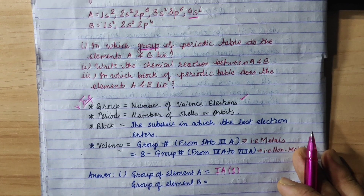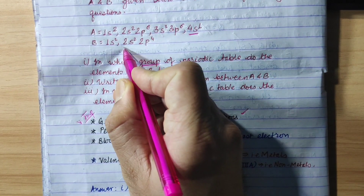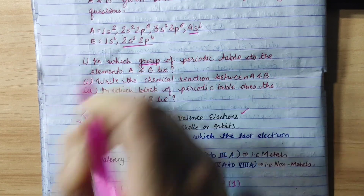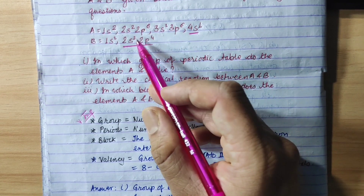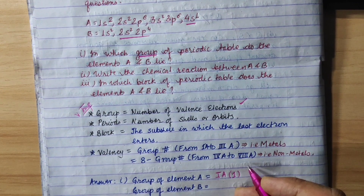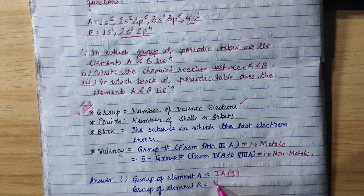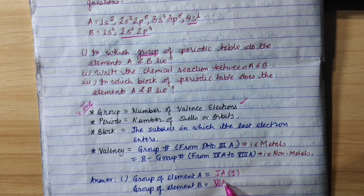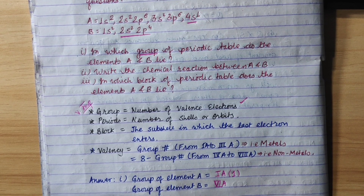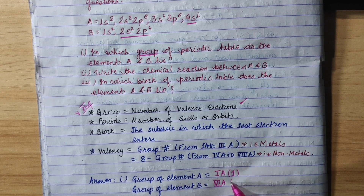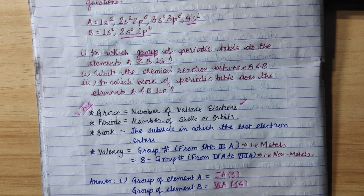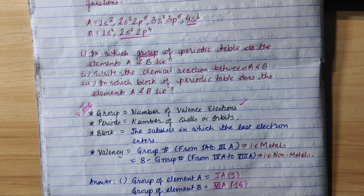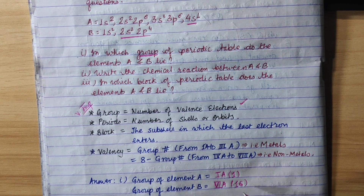Now let's do element B. The second shell is the valence shell. The number of valence electrons is 4 plus 2 equals 6. In the old grouping system this is group 6A. In the new grouping system, group 6A plus 10 gives group 16.